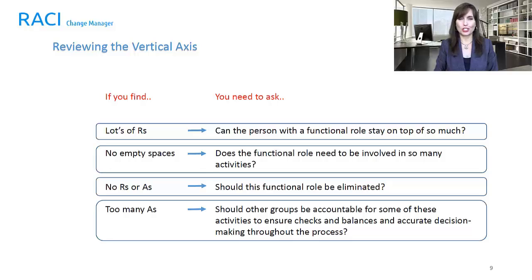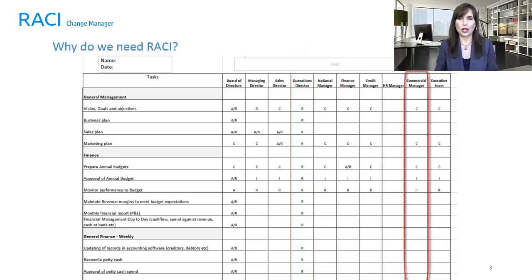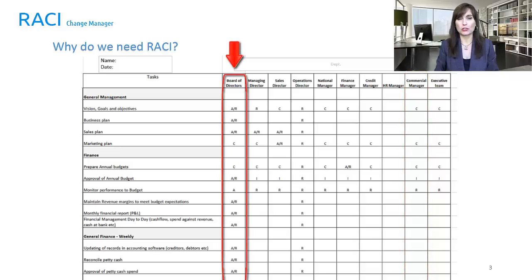In reviewing a RACI chart, it's important to check the columns and rows. Starting with the columns — the vertical axis: if there are too many R's, ask whether the person with that functional role can stay on top of so much. If you see no empty spaces, ask whether the functional role needs to be involved in so many activities. If there are no R's or A's, ask whether this functional role should be eliminated. If there are too many A's, ask whether other groups should be accountable to ensure checks and balances and accurate decision-making throughout the process.